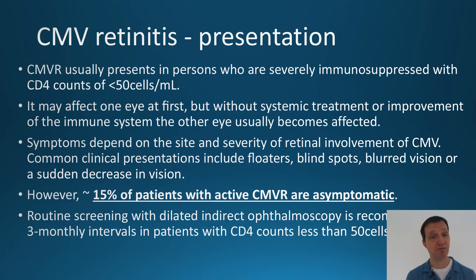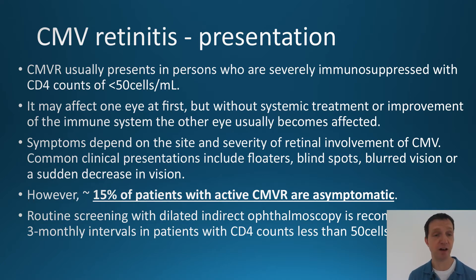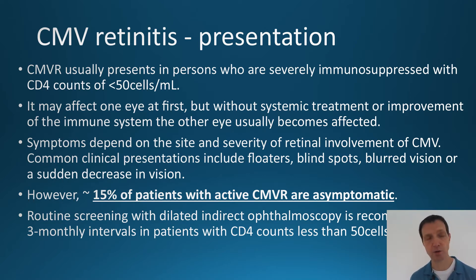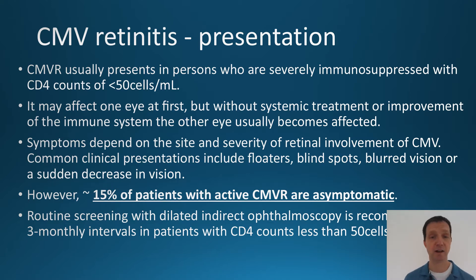In terms of CMV retinitis presentation, you'll probably only see this with CD4 counts below 50, and it may only affect one eye at first but is usually bilateral over time. The patient might present with floaters — the little specks you get in front of your eye when you look at a blue sky — and may end up with larger blind spots, blurred vision, or sudden decrease in visual acuity. However, it's important to know that 50 percent of patients with CMV retinitis are asymptomatic, so if your CD4 count is low you should have fundoscopy performed.